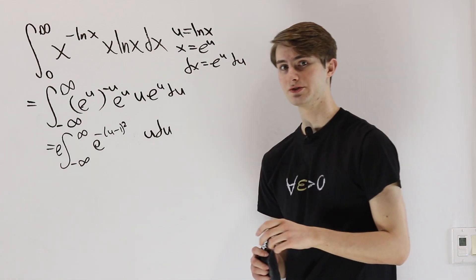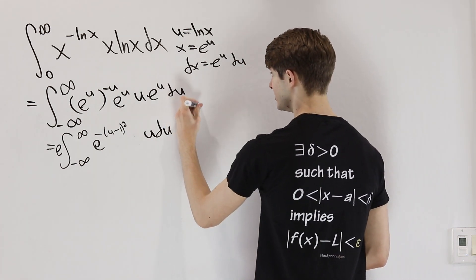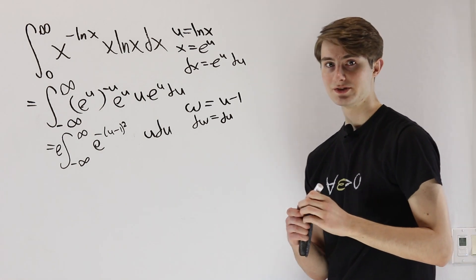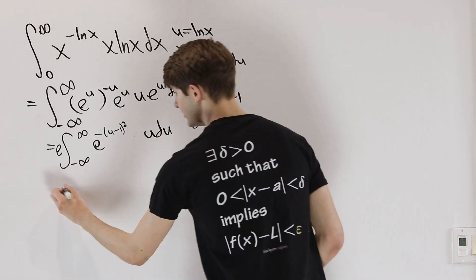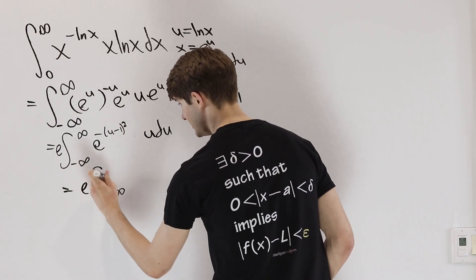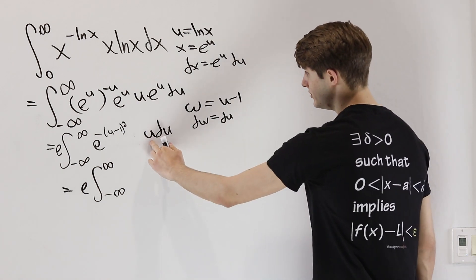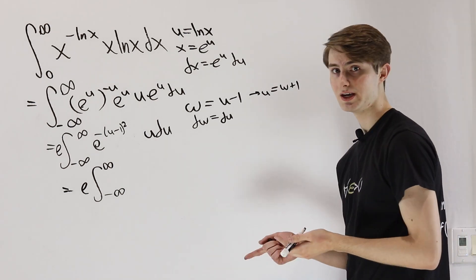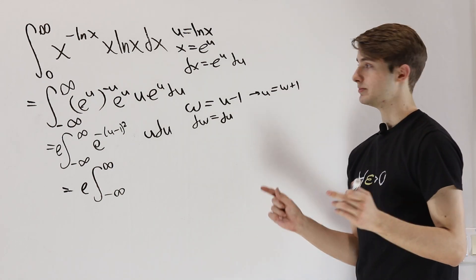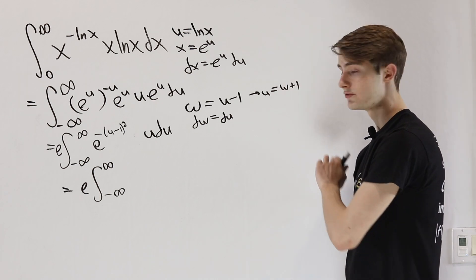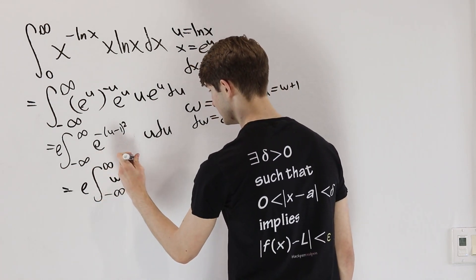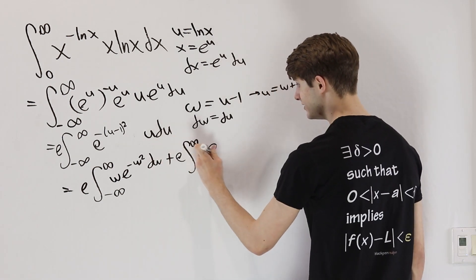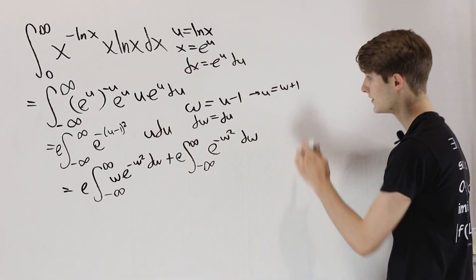We need to simplify e to the negative u minus 1 squared, so let's make another substitution: w equals u minus 1, then dw equals du. We don't have to worry about the bounds because infinity plus 1 is still infinity. We get e times the integral from negative infinity to infinity, where u becomes w plus 1. We split the integral into two parts: first the integral of w times e to the negative w squared dw, and then e times the integral of e to the negative w squared dw.